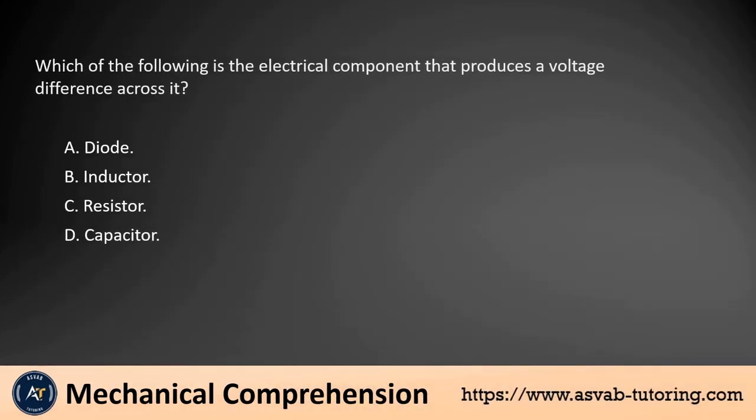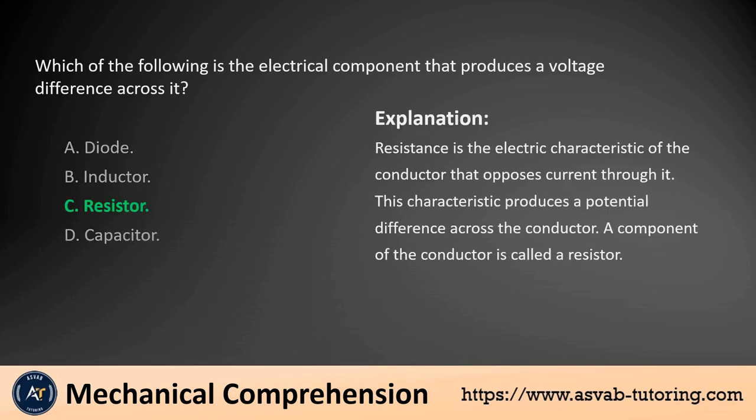Which of the following is the electrical component that produces a voltage difference across it? A. Diode. B. Inductor. C. Resistor. D. Capacitor. The answer is C. Resistance is the electrical characteristic of a conductor that opposes current through it. This characteristic produces a potential difference across the conductor, and such a component is called a resistor.